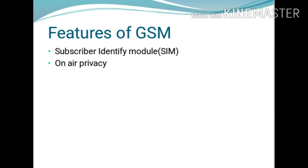A SIM is used to activate service from any GSM phone. Without a SIM, a GSM handset is not operable. The SIM is available in different sizes depending upon the design of the GSM handset. For on-air privacy, in analog communication the calls are easily monitored by other systems. In GSM, every transmitter uses an encryption algorithm which converts data into a digital stream and transmits it. Privacy is made possible by encrypting the digital bit stream using a key that is known only to the cellular receiver, and the key changes with time for each user.